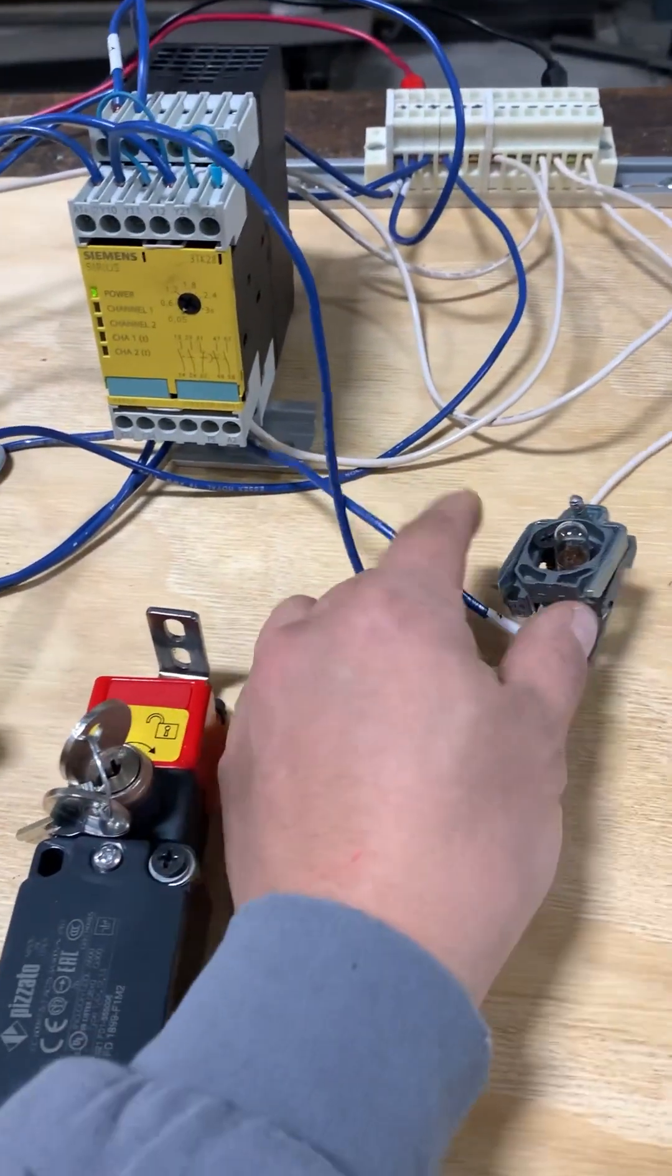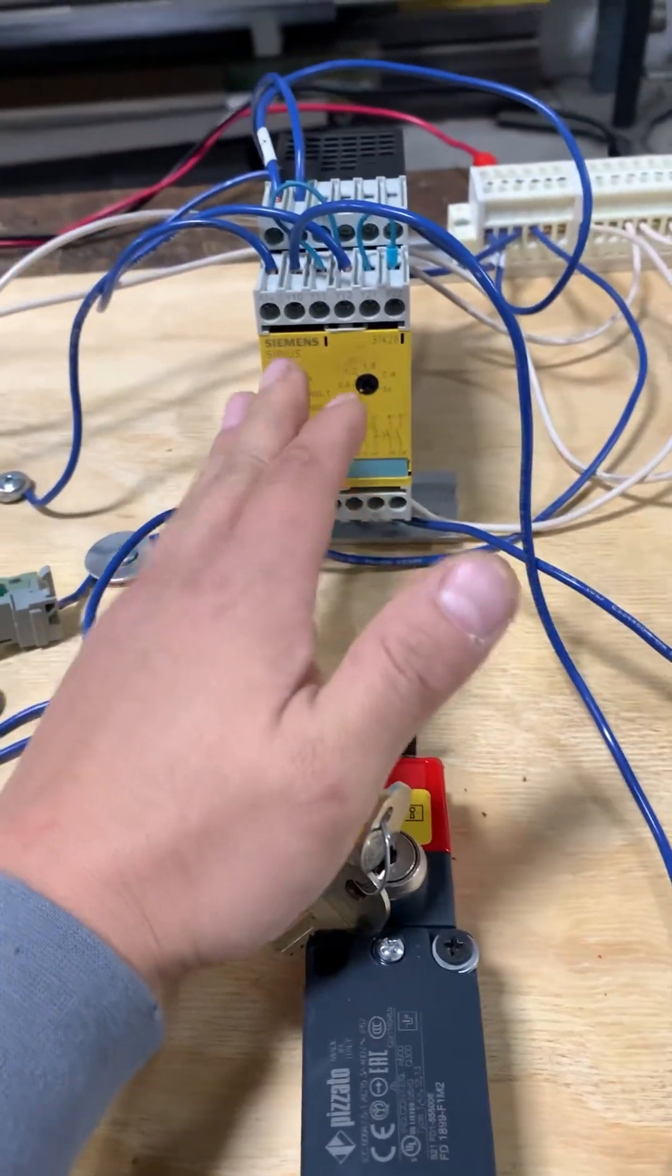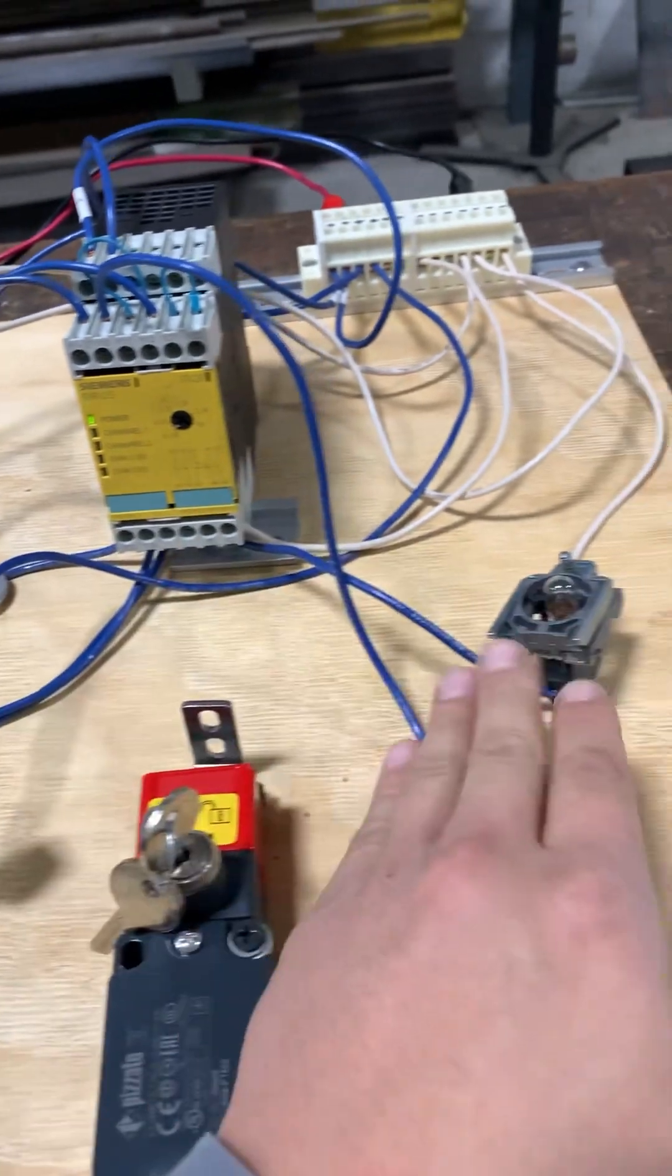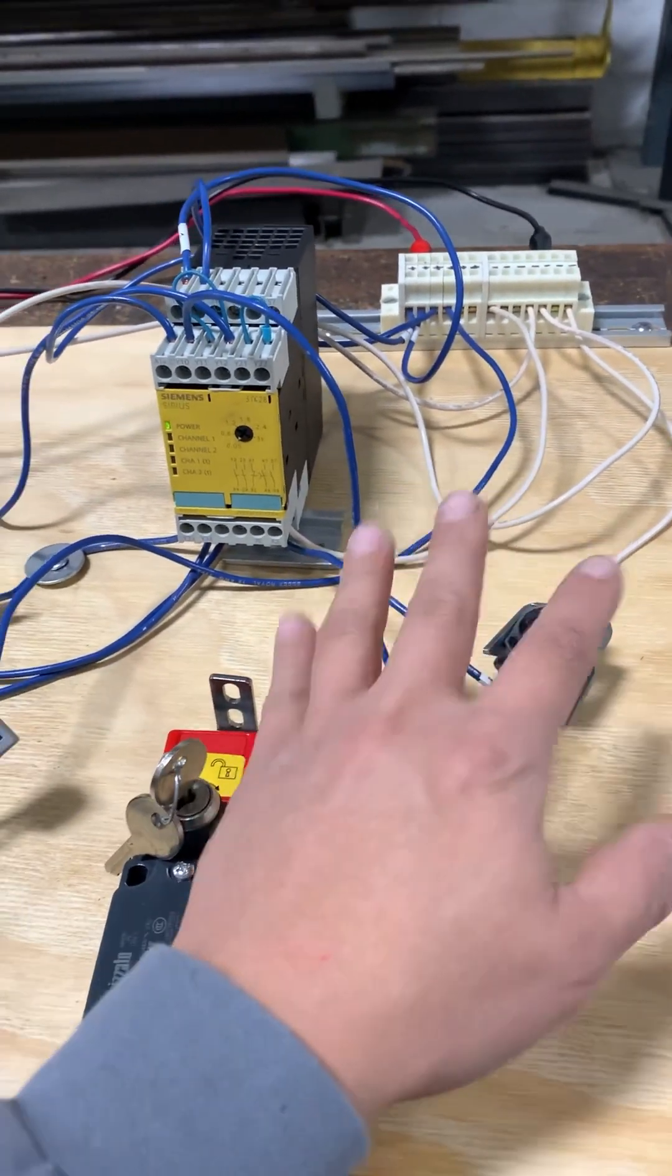So then I have this indicating light coming off from one of the normally open contacts on the relay. When the relay completes, it's going to turn on this indicating light to notify that you have control power.